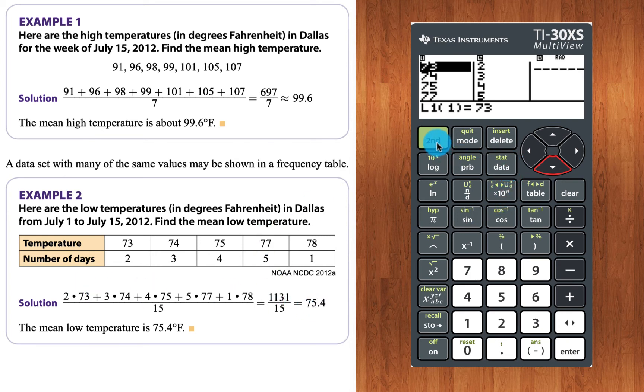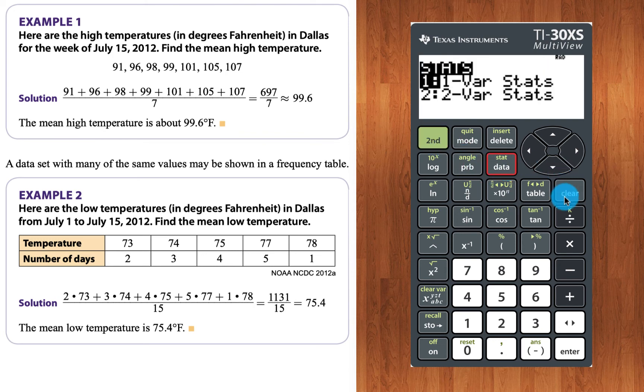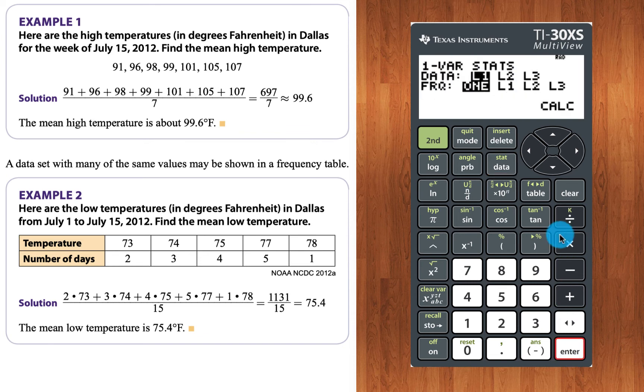So we go here to second, and then we hit the data key, which gives us stats. And we're still going to ask it for one variable statistics. So we still press enter for that. But this time, you'll notice this says FRQ, that's a little abbreviation for frequency list. And yeah, this time we do have a frequency list.